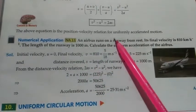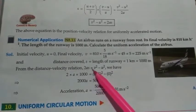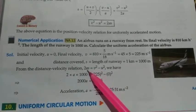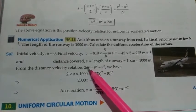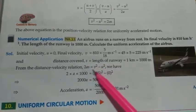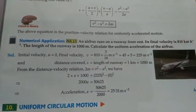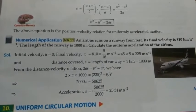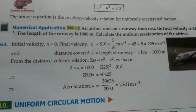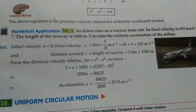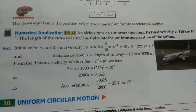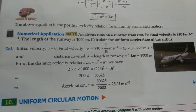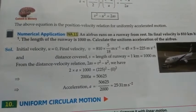We use the third equation of motion, which relates velocity, distance, and acceleration — no need for t. In the first equation, distance plays no role; in the third equation, time plays no role. The second equation has all values including distance, velocity, time, and acceleration, but it doesn't have final velocity v directly. So we choose the formula that fits the given values.